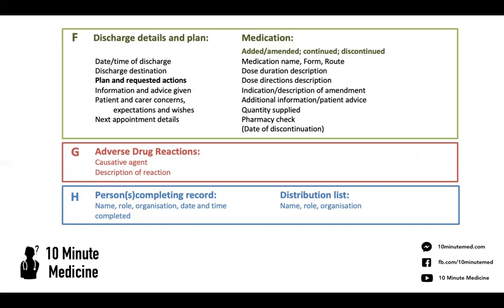Any drug that's a CD — a controlled drug — such as morphine, you want to make sure that when you print out the discharge summary, you need to write out and sign next to that drug because it is a controlled drug. Then we move on to adverse drug reactions: do they have any allergies? If they do, what is the reaction that comes with that allergy, or any adverse drug reactions — so do they get a rash or oedema or anything like that? It doesn't have to be an anaphylaxis-level allergy to be included in this section.